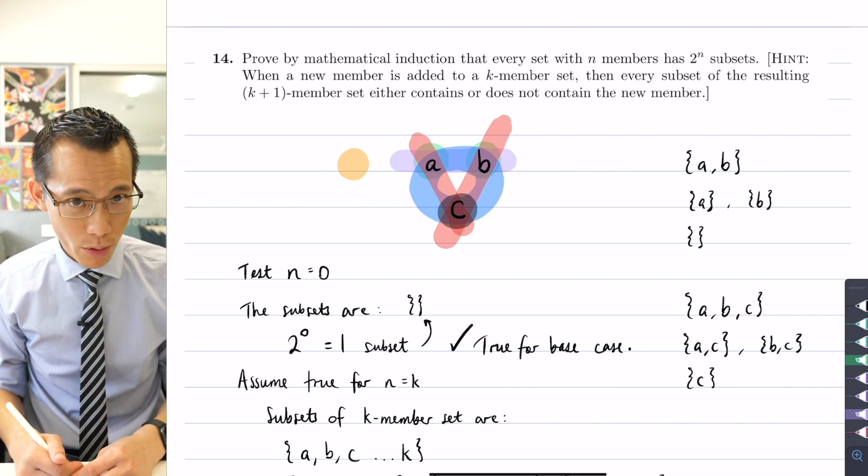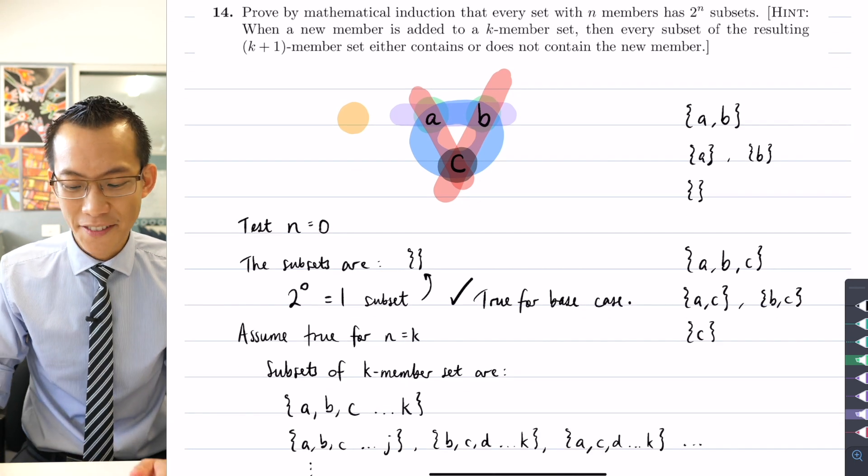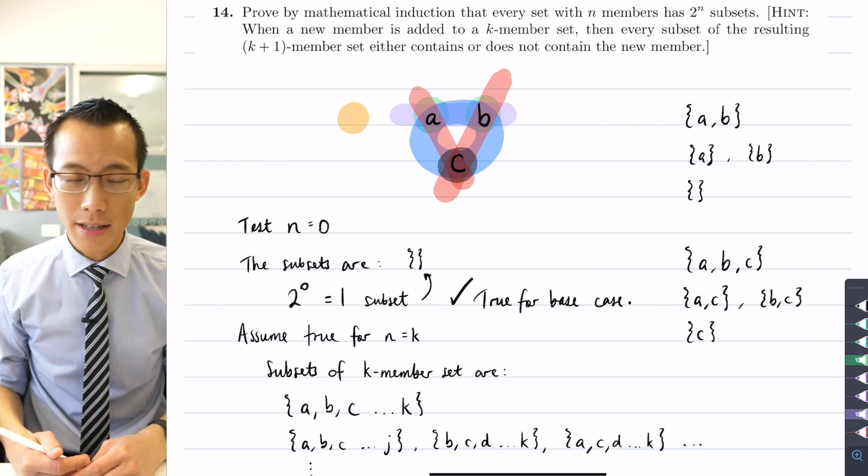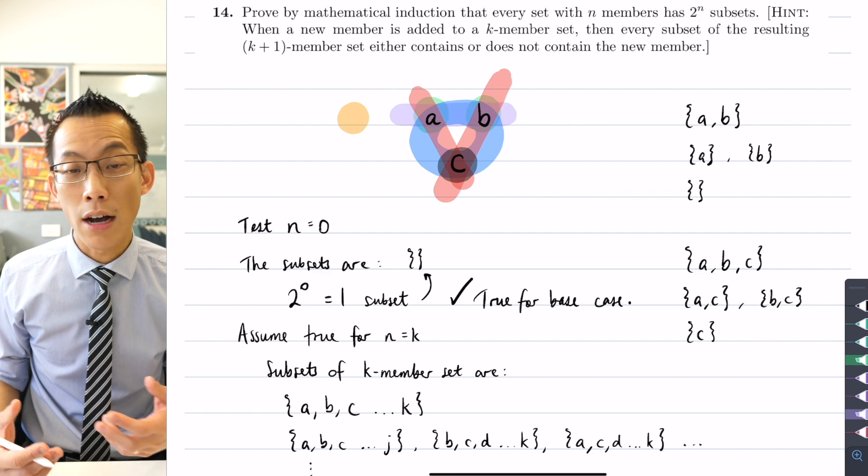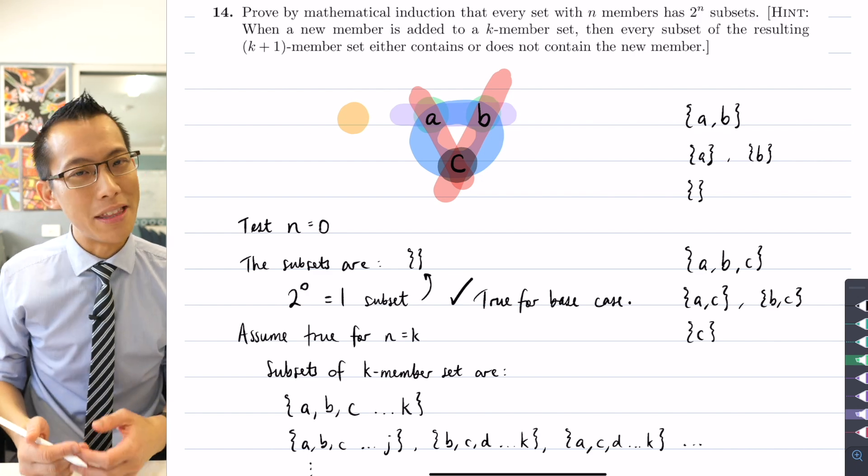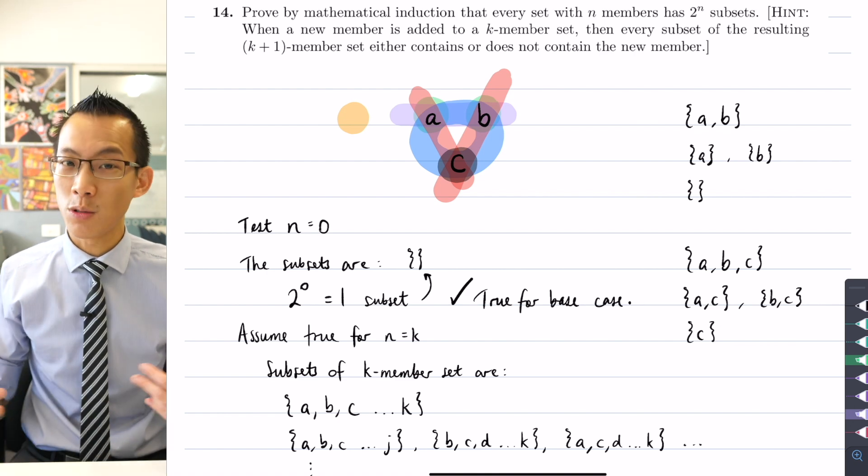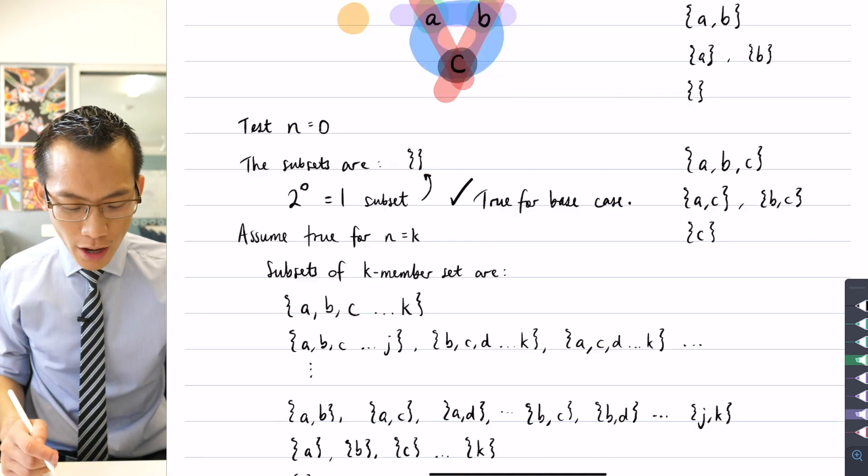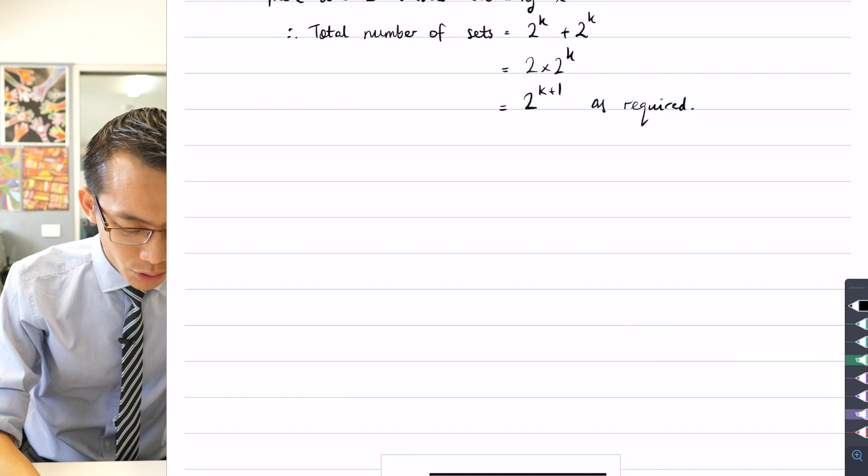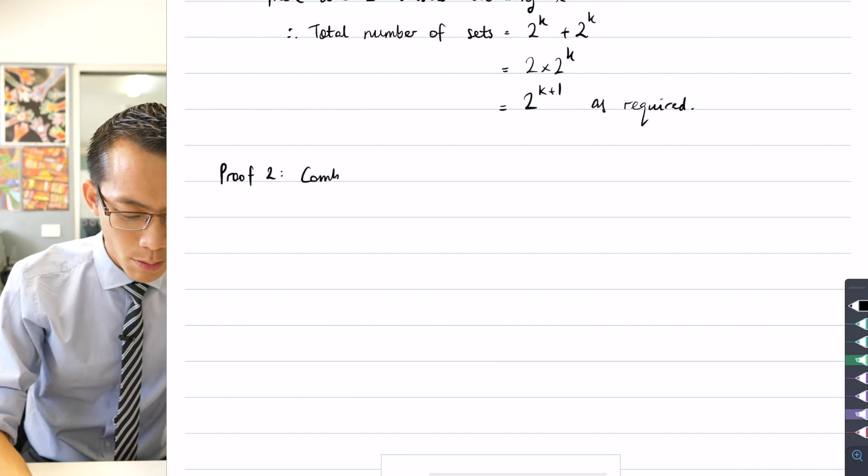It's actually a combinatorial proof because I kind of alluded to this sort of very quietly as I was putting together this example here. There is another way of thinking about this. This is really about choosing combinations, not permutations where the order matters. These are sets where the order doesn't matter. So we're going to use our NCR notation to try and come up with an alternative proof for this. I'm going to call this Proof 2: Combinatorial Approach.